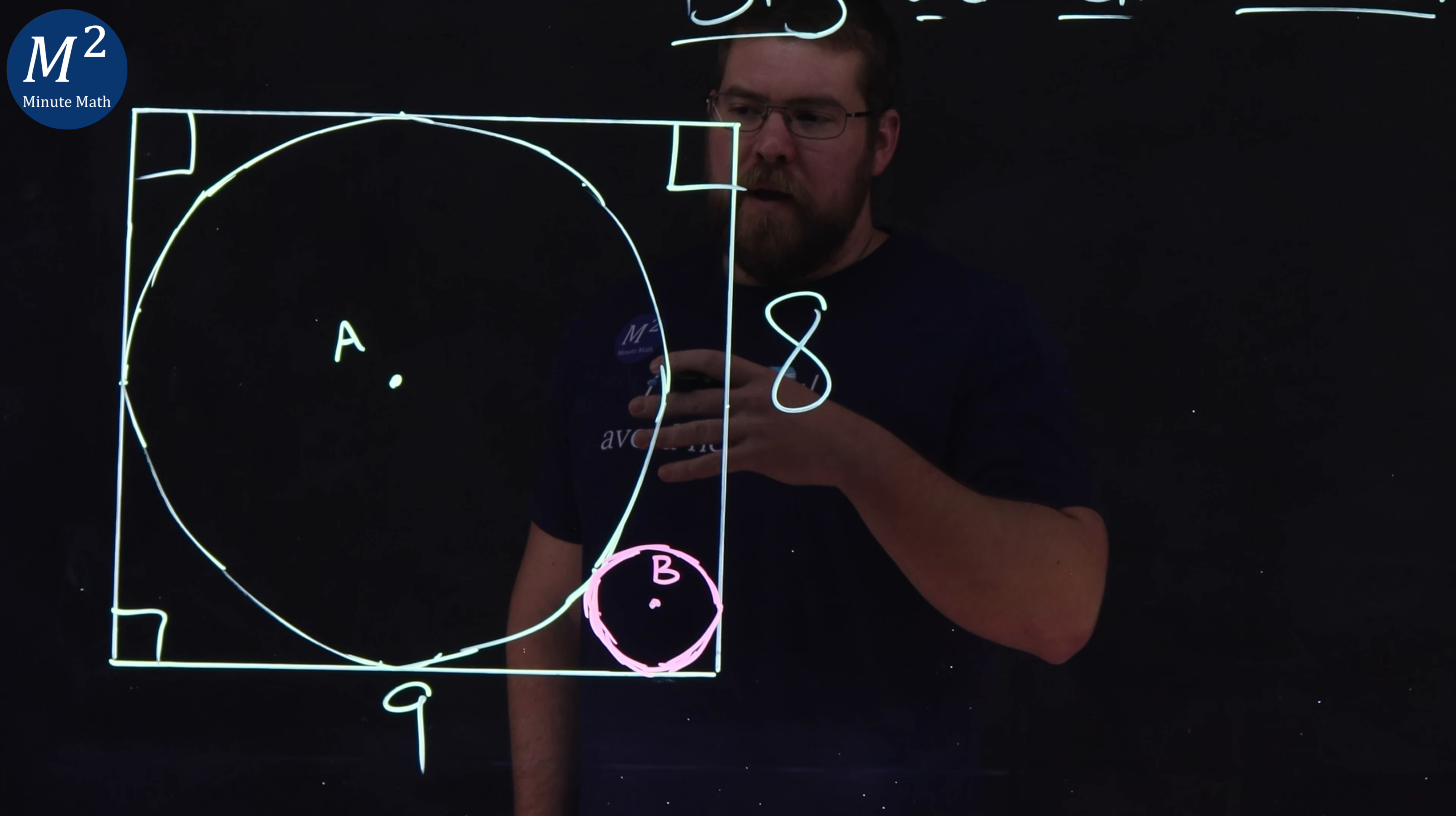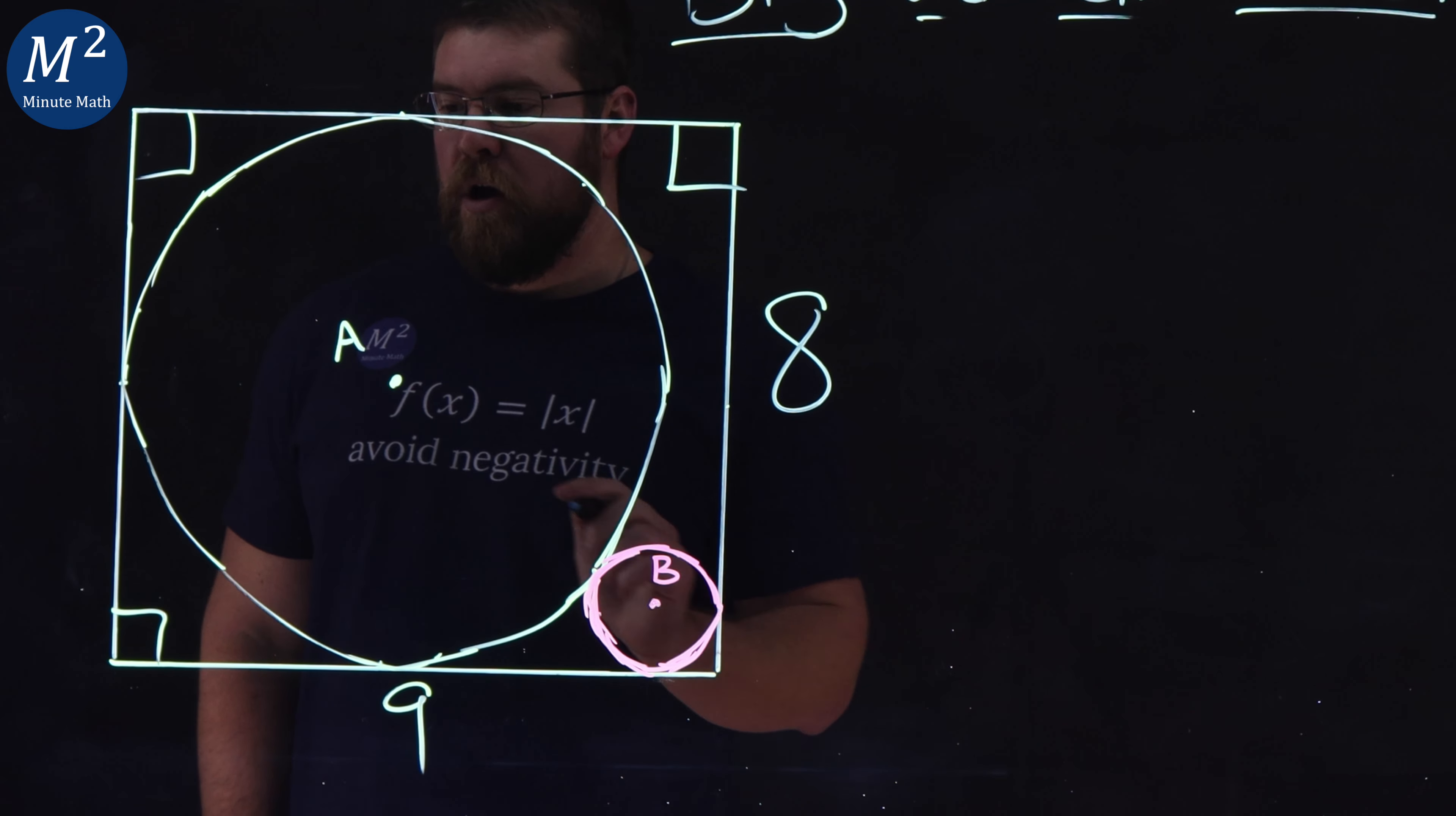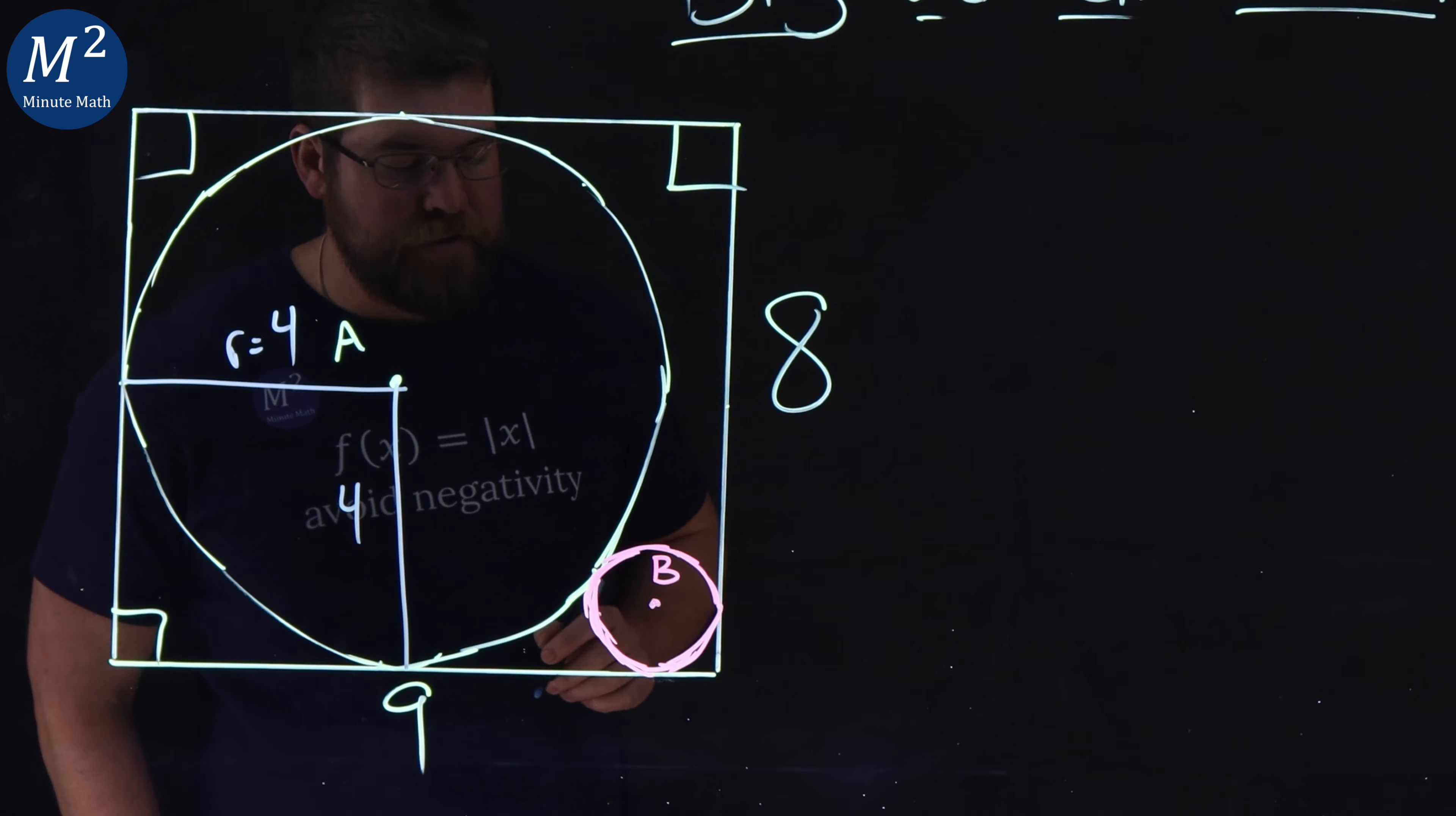So first thing when I'm looking at this problem, I want to see what information I can get. I've noticed here our circle, if we go vertically here, we can see the overall length of the rectangle is eight. Our radius is going to be half that. We have length of four. And we can apply that really in any direction, right? This length is a four as well.